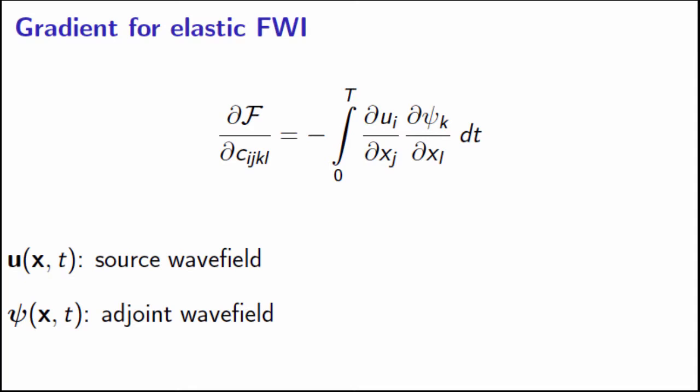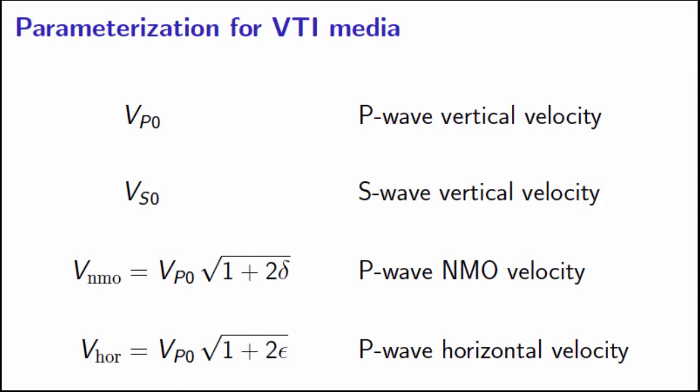Now, there's been a lot of debate, like we had yesterday, about what the appropriate model parameterization is. There are different combinations that one can use. And we use a specific combination, which is the vertical P and S wave velocities and the P wave horizontal and NMO velocities. So one reason we use this is because all of them have the same order of magnitude and the same units. And the other reason is that velocities, as opposed to stiffness coefficients themselves, constrain travel times and amplitudes.